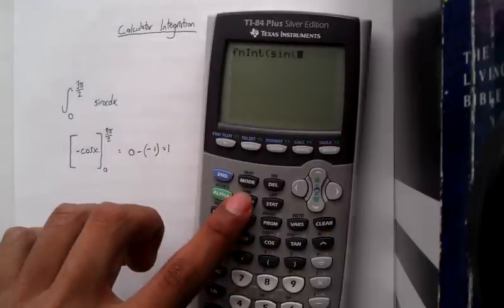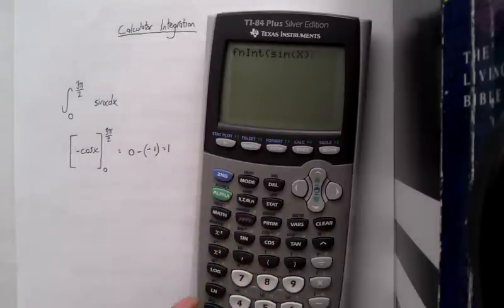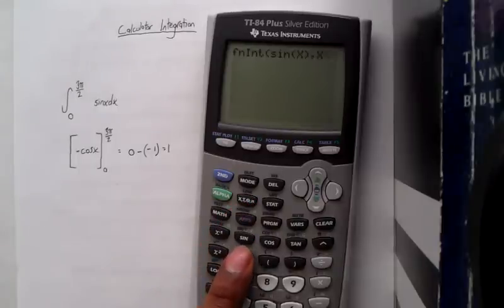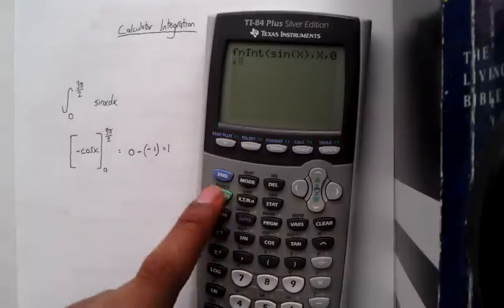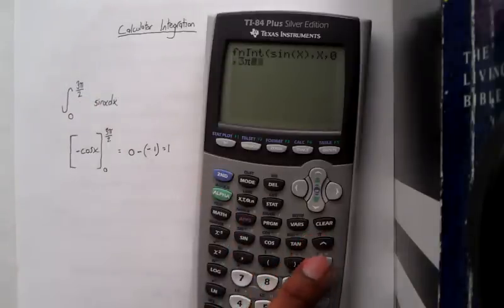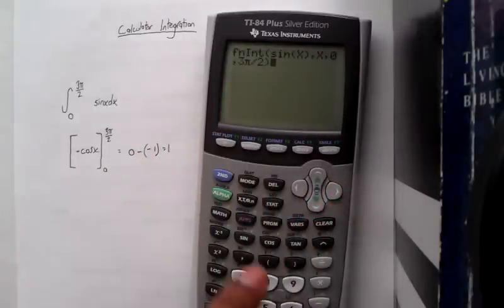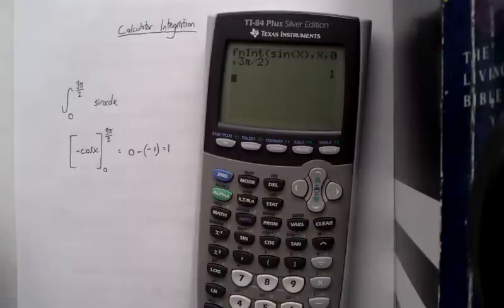Then you go comma x, comma, and then your lower limit, comma, your upper limit. Just make sure all of your parentheses line up. And press enter, and it'll tell you what the integral is.